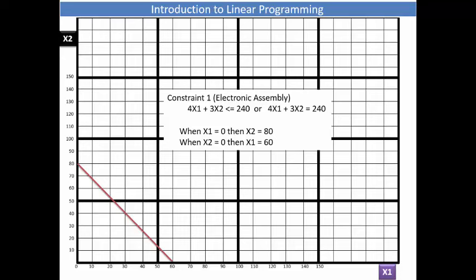Examining the mathematical form of constraint 1, we see that when x1 is equal to 0, then x2 is equal to 80. Also, when x2 is equal to 0, then x1 is equal to 60, we finally draw the corresponding line.